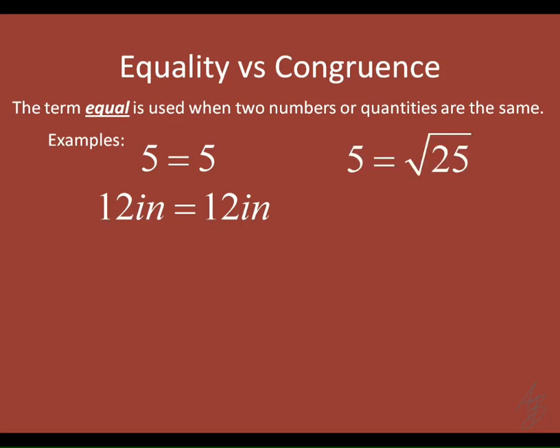We could also say 5 equals the square root of 25. Here's another use of the equal sign where what's on the left and what's on the right don't necessarily look the same, but they still have the same value. If we were to simplify both sides, they would look the same. We could also say 24 inches equals 2 feet — another proper use of the equal sign because those are measurements or quantities, and we use the equal sign to say that quantities are the same.